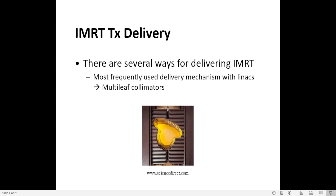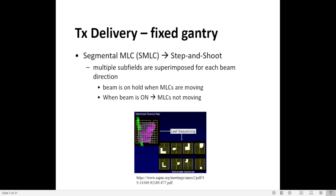Once the optimizer computes the fluence maps, a leaf sequence algorithm needs to be applied to convert the fluence maps into deliverable MLC patterns. The leaf sequence algorithm for step-and-shoot will create MLC patterns that, when superimposed, will deliver the dose for that field. So we have multiple subfields, and when superimposed they produce the desired dose distribution for that field.